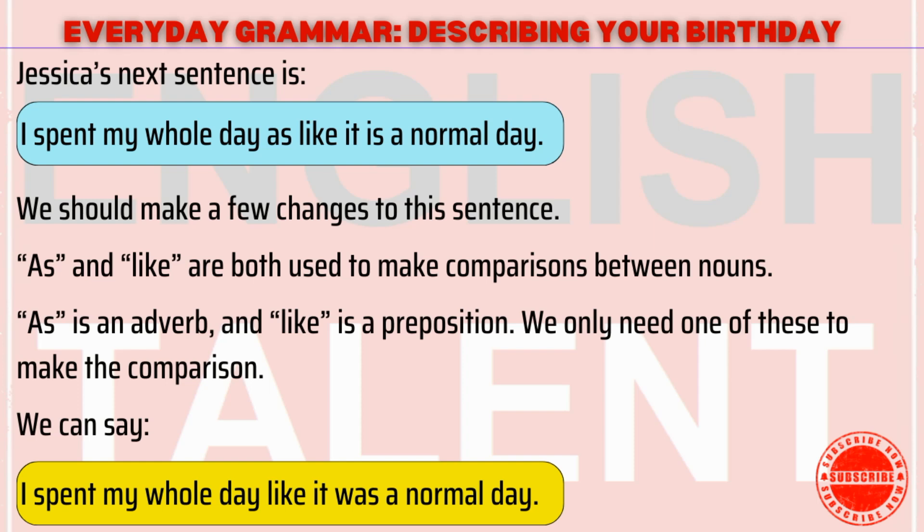Jessica's next sentence is: I spent my whole day as like it is a normal day. We should make a few changes to this sentence. As and like are both used to make comparisons between nouns. As is an adverb, and like is a preposition. We only need one of these to make the comparison. We can say: I spent my whole day like it was a normal day.